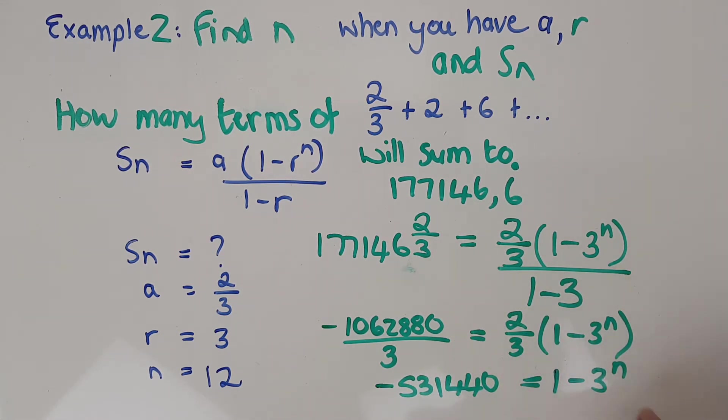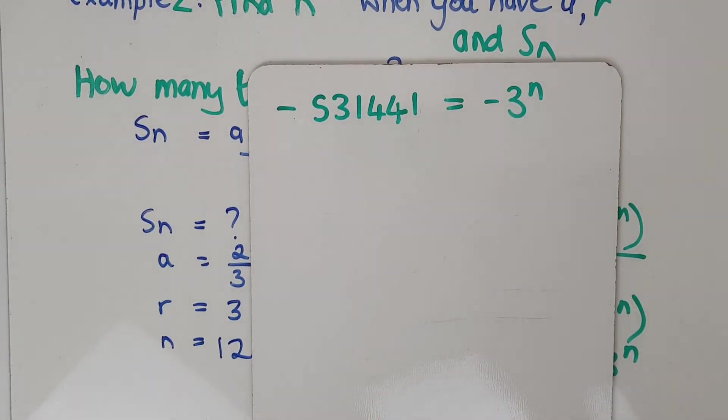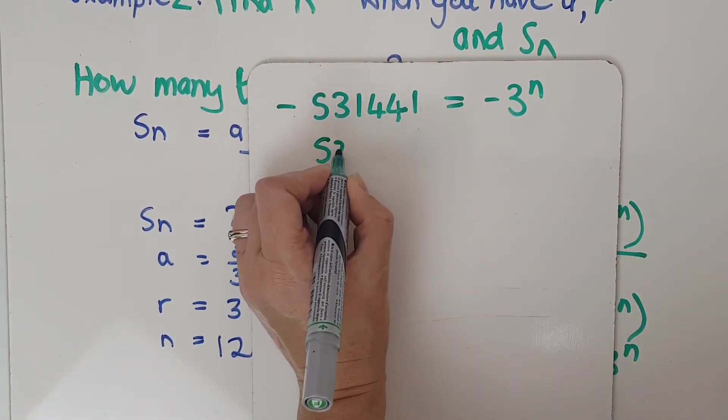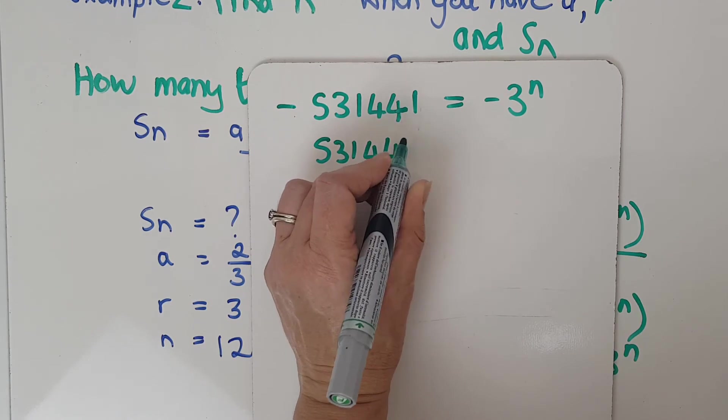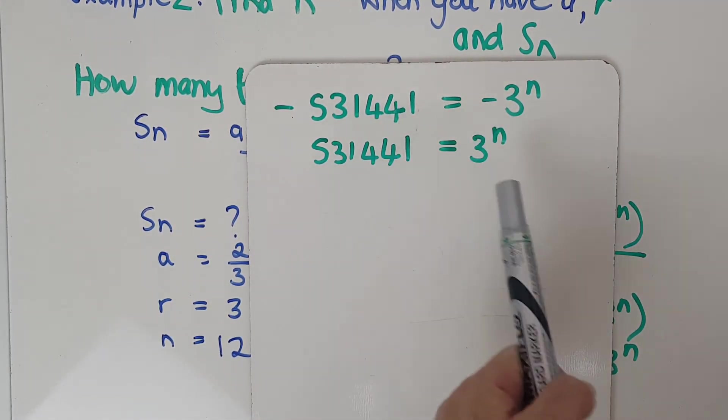If you're worrying about the negatives, then just trust the process because when I subtract the 1 there, it's still negative. And then here is negative. So my negatives will end up cancelling. Now to the smaller board because I'm running out of space, that's what I end up with once I've subtracted the 1. And obviously then I can just get rid of the negatives.